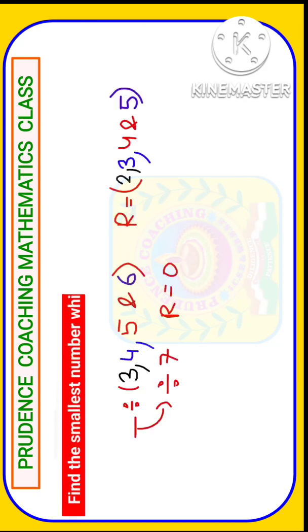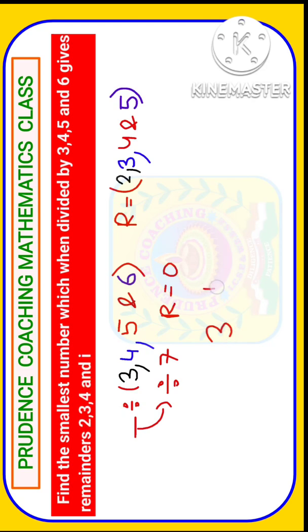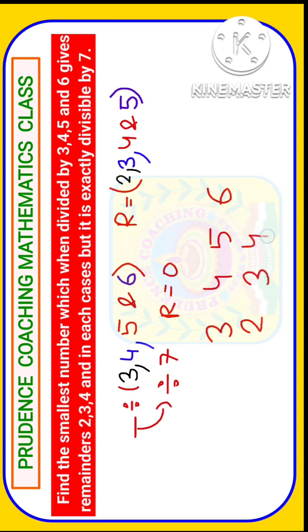Find the smallest number which when divided by 3, 4, 5, 6 gives remainder 2, 3, 4 and 5 respectively.